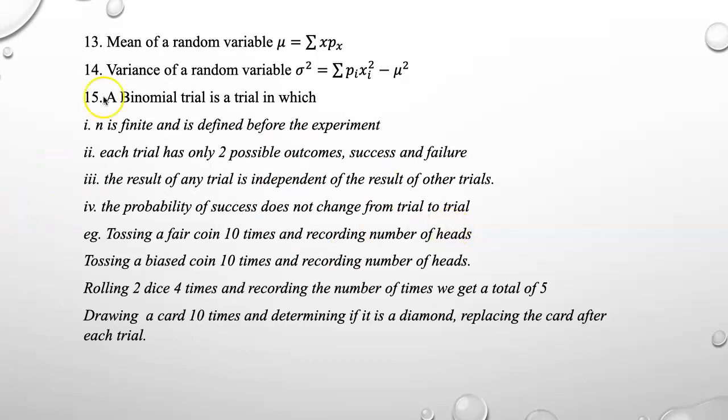Here are some examples of binomial variables: tossing a fair coin 10 times and recording number of heads, tossing a biased coin 10 times and recording number of heads. Here the n is defined before the experiment. Rolling two dice 4 times and recording the number of times we get a total of 5, or drawing a card 10 times and determining if it is a diamond, replacing the card after each trial.